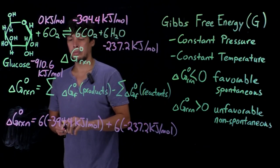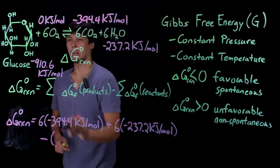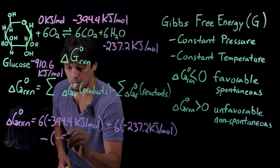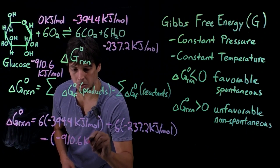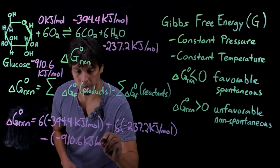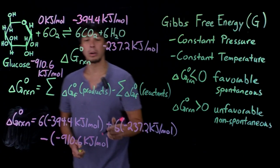On the reactant side, we now have to subtract out glucose, which is negative 910.6 kilojoules per mole. And notice, we're not multiplying this by anything because there's only one molecule of glucose, so we're multiplying by one.